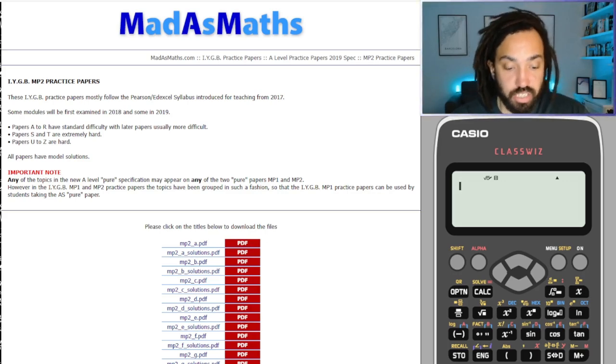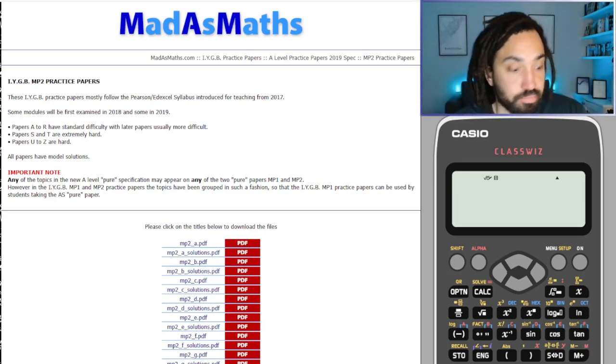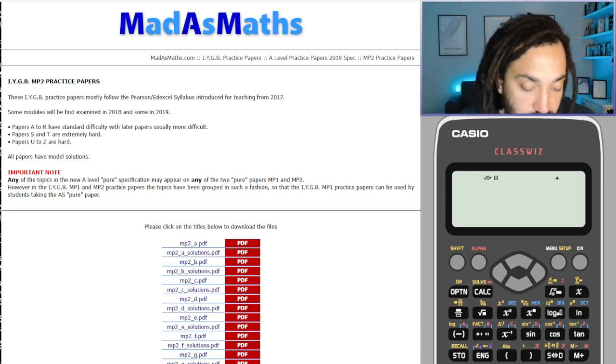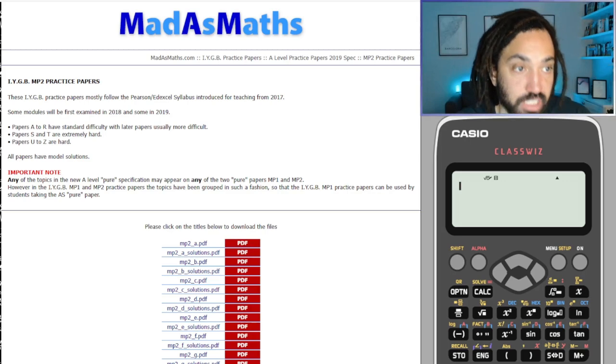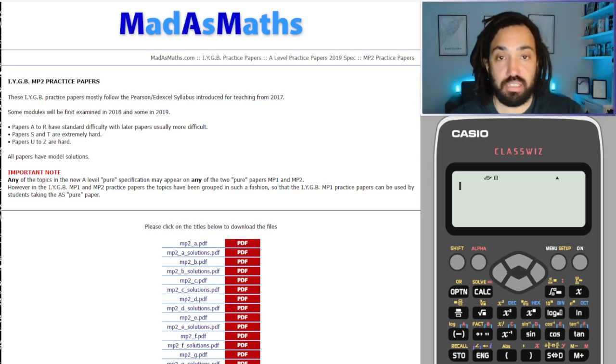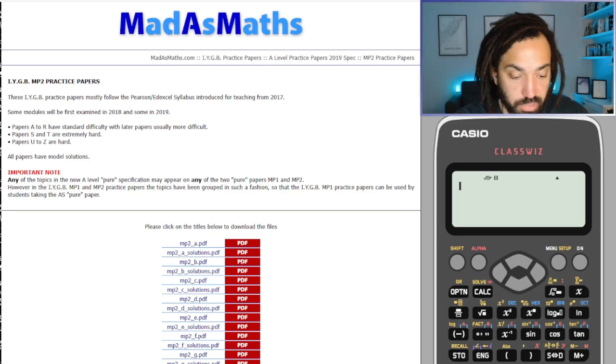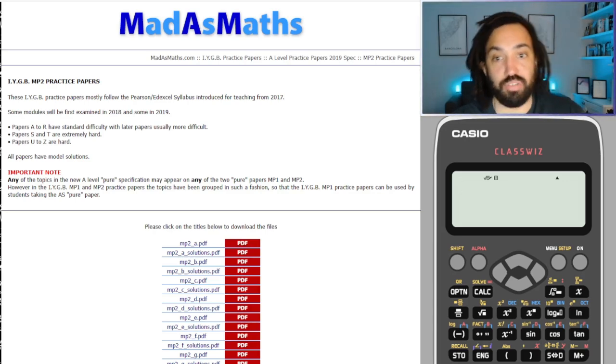Okay, right, let's do this. So Siri doesn't do random letters. Siri, give me a random number between 1 and 26. It's 19. Okay, so 19 would be S. Oh fantastic, S is extremely hard. Brilliant.